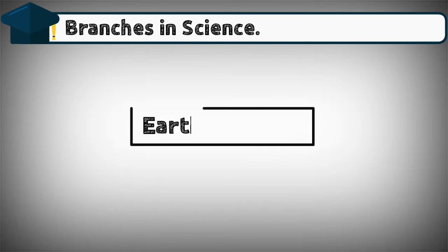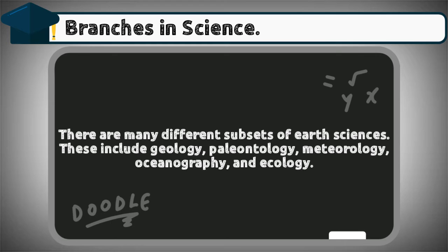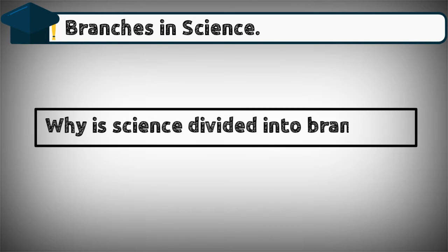Earth sciences. There are many different subsets of Earth sciences. These include geology, paleontology, meteorology, oceanography, and ecology. Why is science divided into branches?